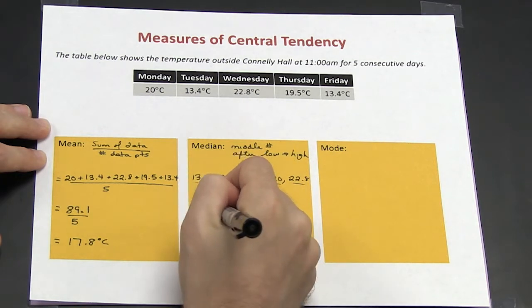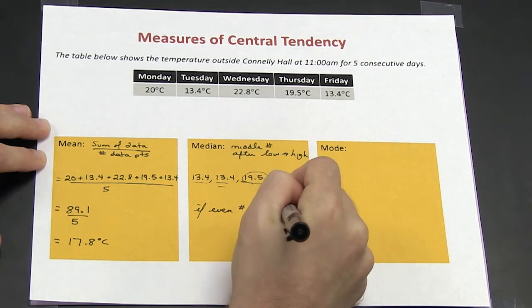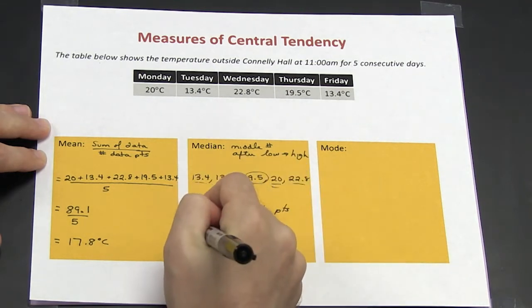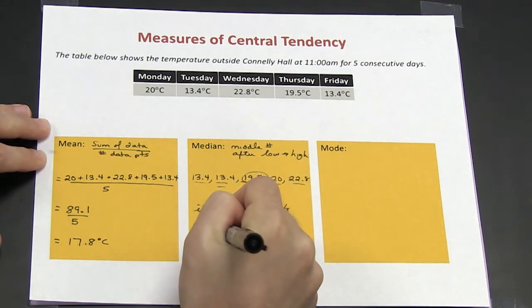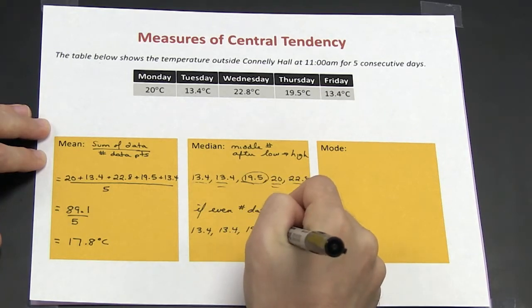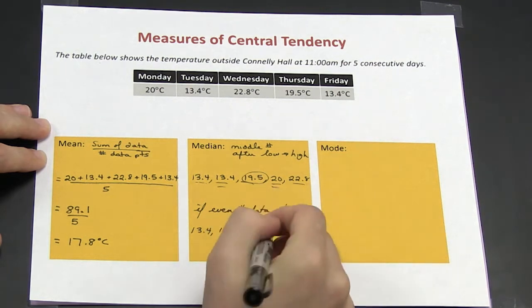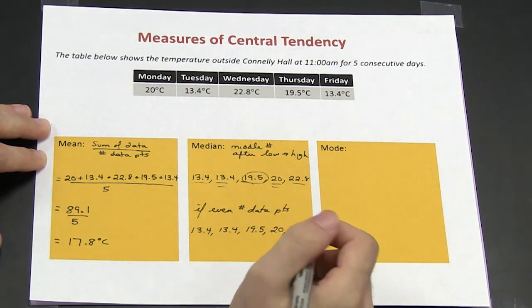If you have an even number of data points, so let's imagine that I have 13.4, 13.4, 19.5, 20, 20, and 22.8. So I've added another 20 degree measurement.